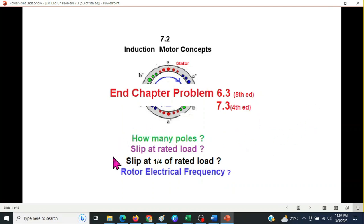And these are the four questions that we will be discussing in the example: how many poles, slip at the rated load, slip at one-fourth of the rated load, and rotor electrical frequency.